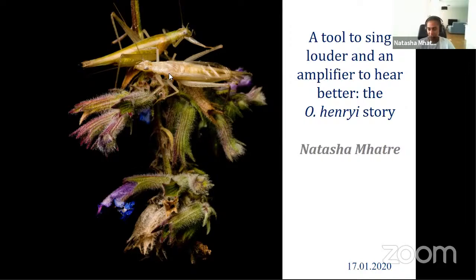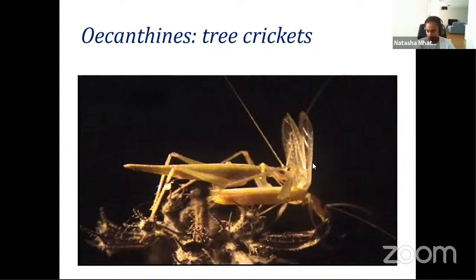I'm going to talk about how this insect — the male tree cricket — makes sound, and how the female tree cricket hears that sound and responds. The male calls by using his wings; the female hears this call, tracks the male down, and they copulate. He transfers his spermatophore to her. After copulation, she feeds on a gland in the back of the male called a nuptial gland, and the longer she feeds, the more sperm transfers into her. It's a fairly classic, beautiful mating system.